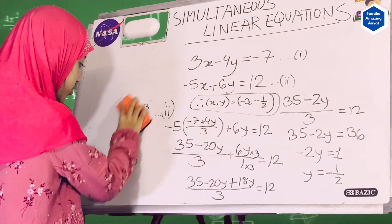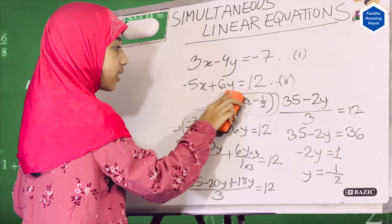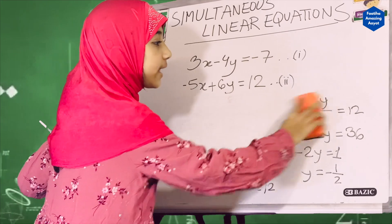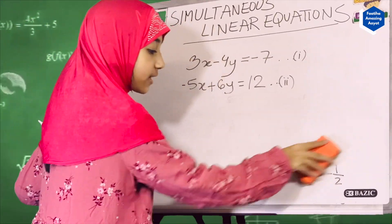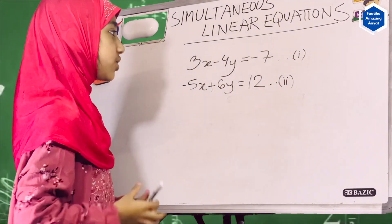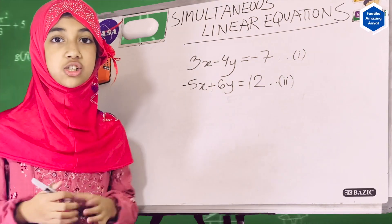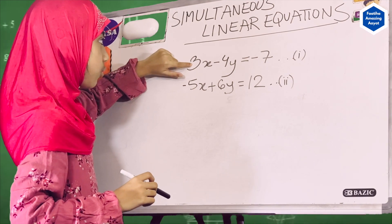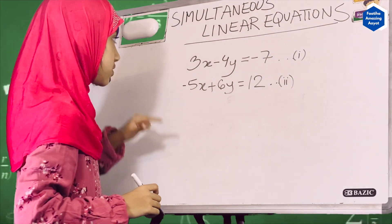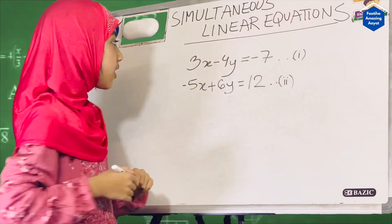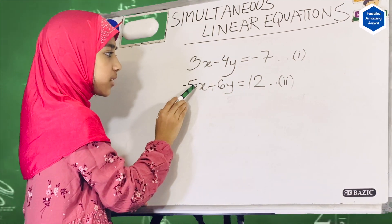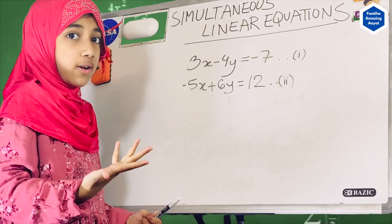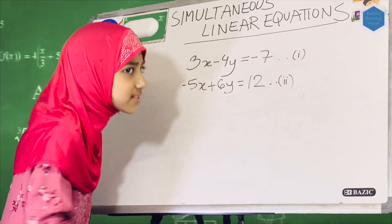We're going to be using the same equations, but the way we solve it won't be the same. I actually prefer the substitution method, but the addition-subtraction method is also really easy. For the addition-subtraction method, what we have to do is make the coefficients of x the same in both equations. We can make both equal to 15 — multiplying equation 1 by 5 and equation 2 by 3 — so that we can eliminate x entirely.